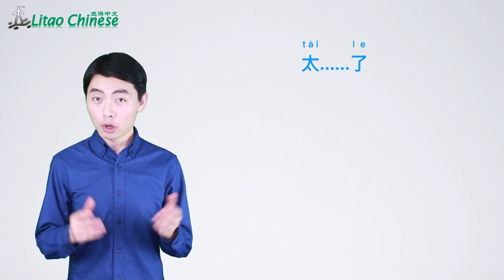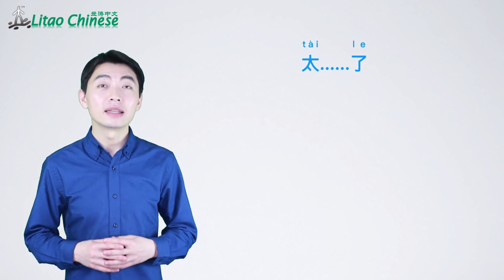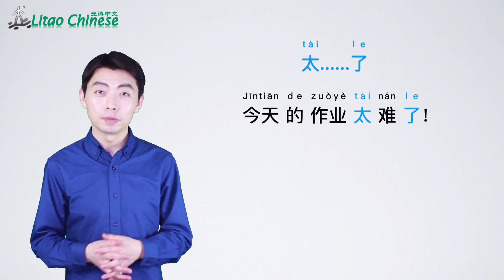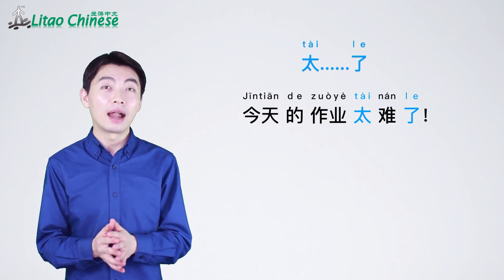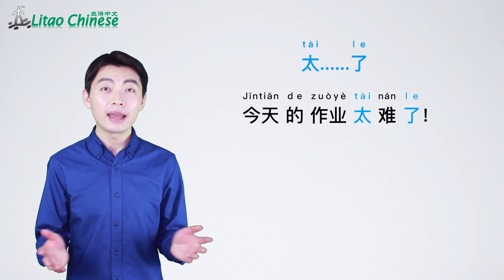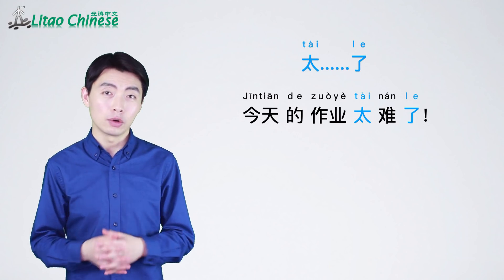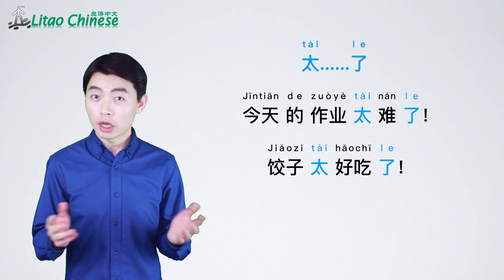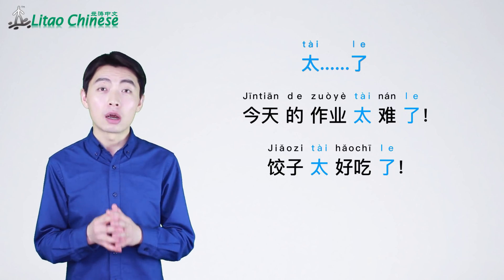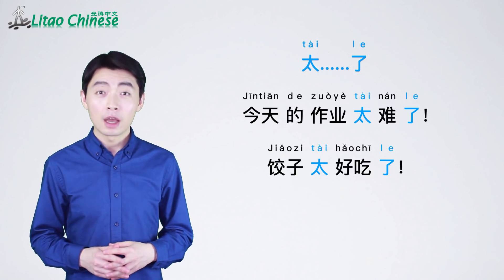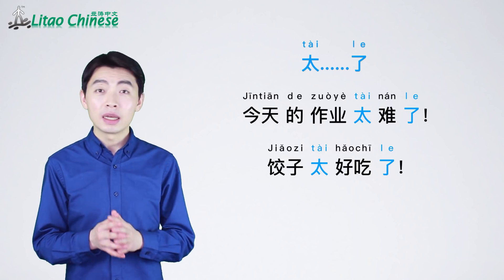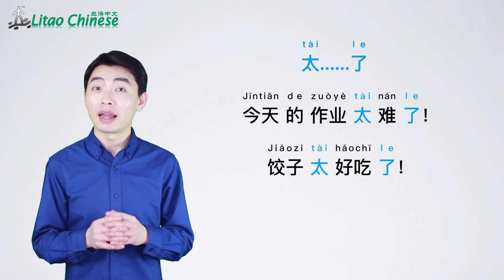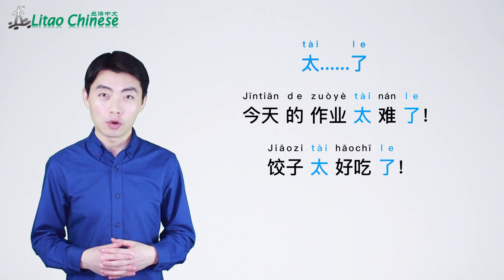The pattern 太...了 (tài...le) is often used to express a person's response to a situation that is excessively worse or better than expected. For example: 今天的作业太难了 (jīn tiān de zuò yè tài nán le) — today's homework is too difficult. 饺子太好吃了 (jiǎo zi tài hǎo chī le) — the dumplings are so delicious. You can find more examples in lesson 13 and lesson 33 of our elementary Chinese course.